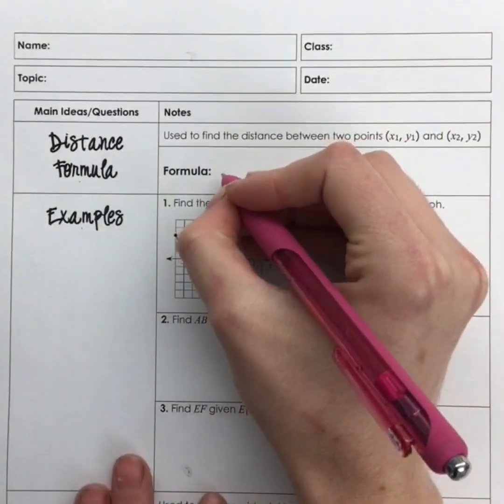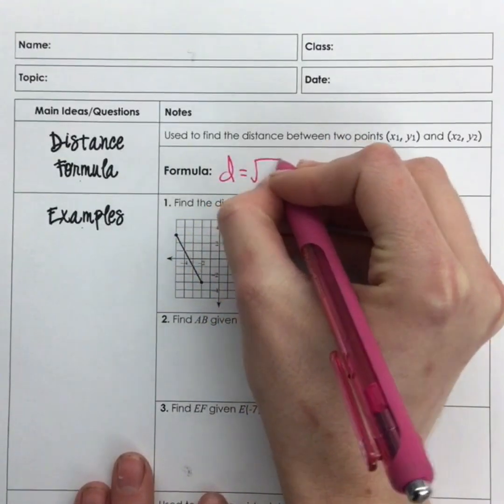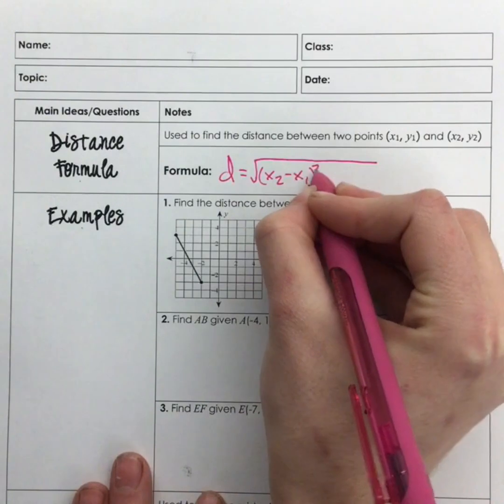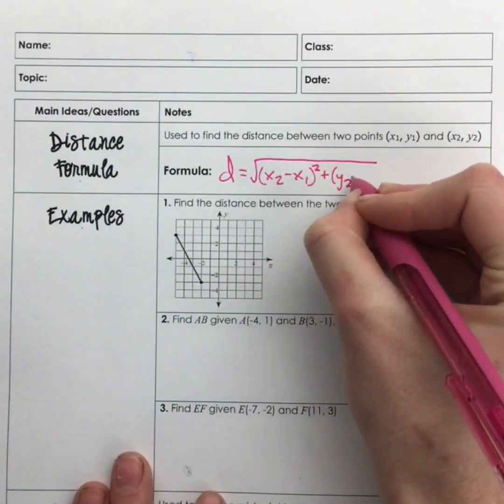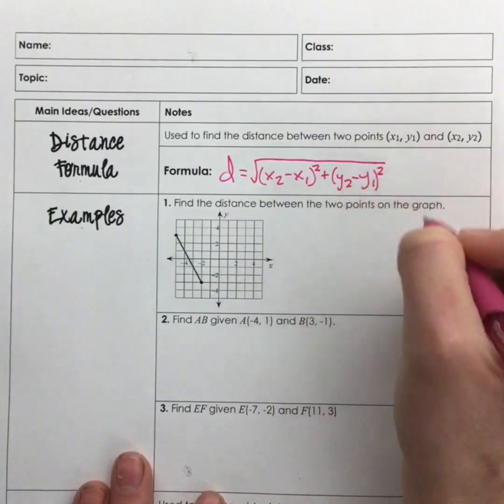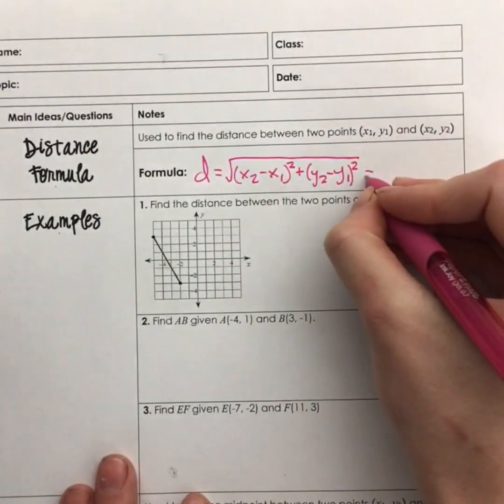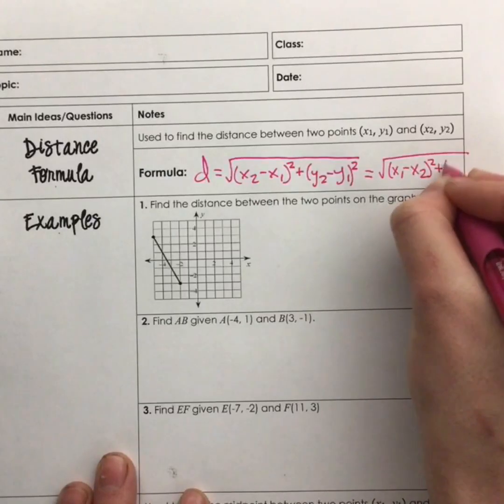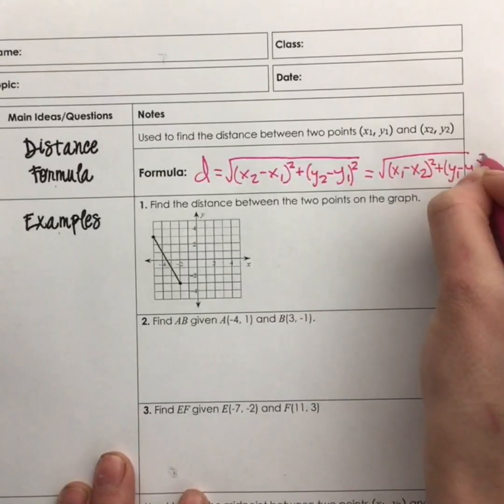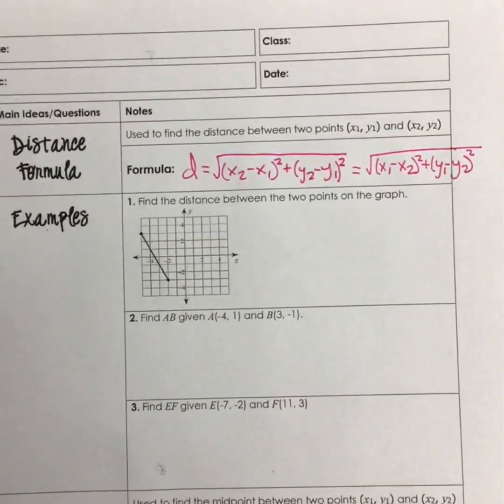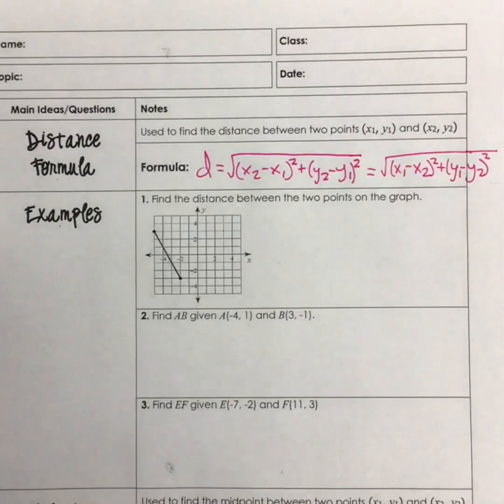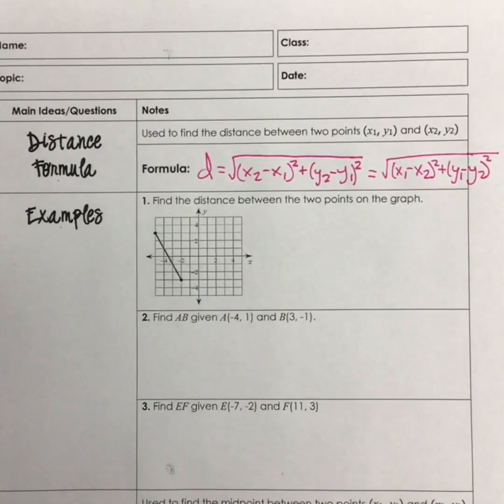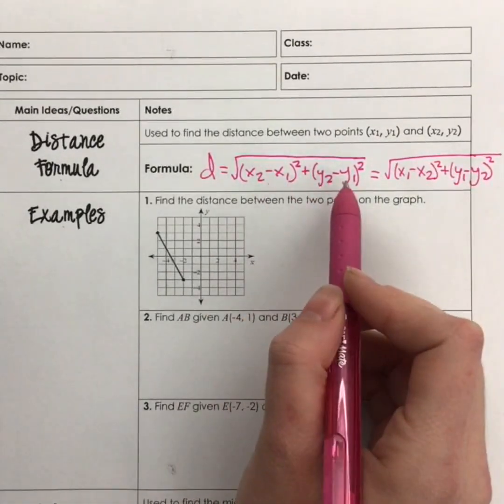Now you can either write the distance formula as the distance is the square root of (x₂ - x₁)² plus (y₂ - y₁)², and that's all under that one square root. Or it's the same thing if you take (x₁ - x₂)² plus (y₁ - y₂)². It's really up to you on which format you want to use for that, but know that they are the same thing as long as you are following the same format for both the x's being subtracted and the y's being subtracted.